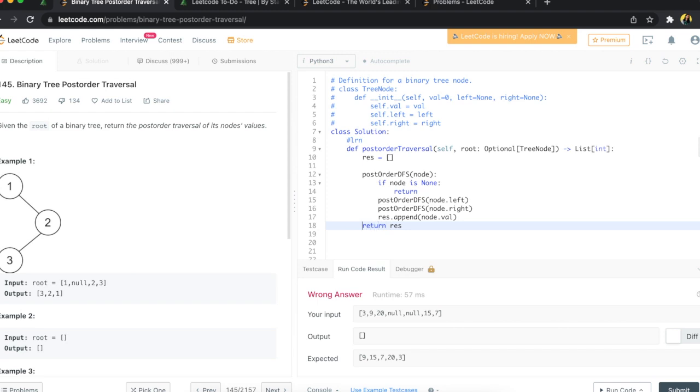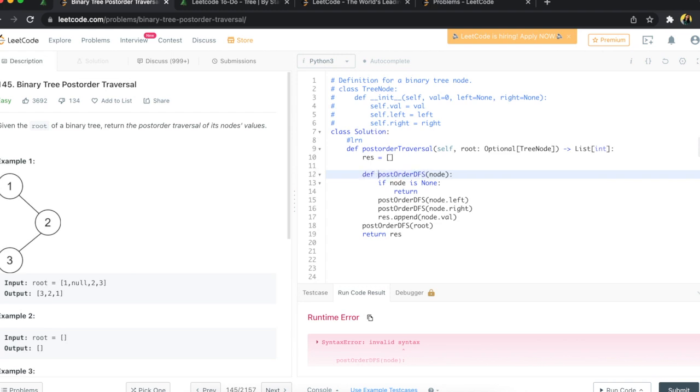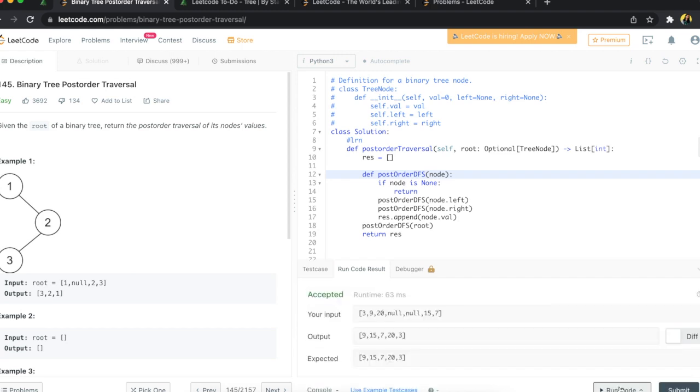And let me initialize this function. So I will call this function with the initial parameter of the root because we are traversing from the root. So we'll say postorder DFS and then root here. Okay, this looks okay to me. Let me give this a run and see if the result is rendering properly. Oh, I need to say def here. Okay, awesome, accepted.